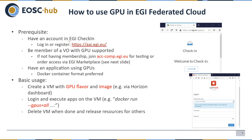To use GPU in the EGI Federated Cloud, first you need to have an account in EGI Check-In. Second, you need to be a member of the VO with GPU support, because cloud providers provide access to certain user groups — Virtual Organizations — not individual users. If you don't have membership, you can join the VO where I am the VO manager, or you can order access with GPU instances via the EGI Marketplace.